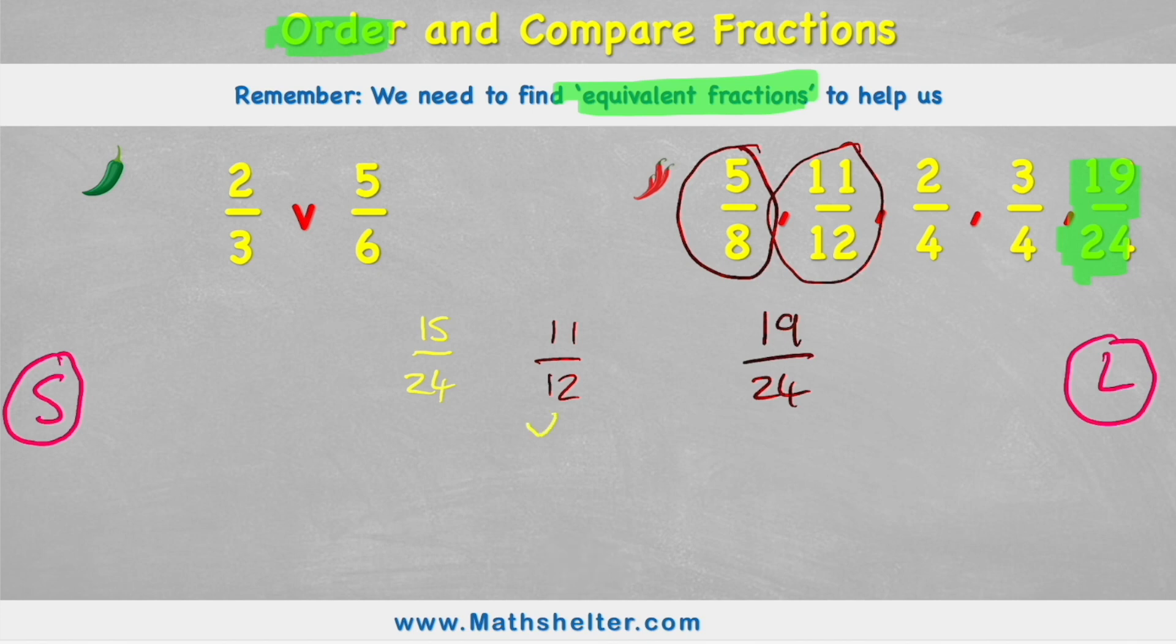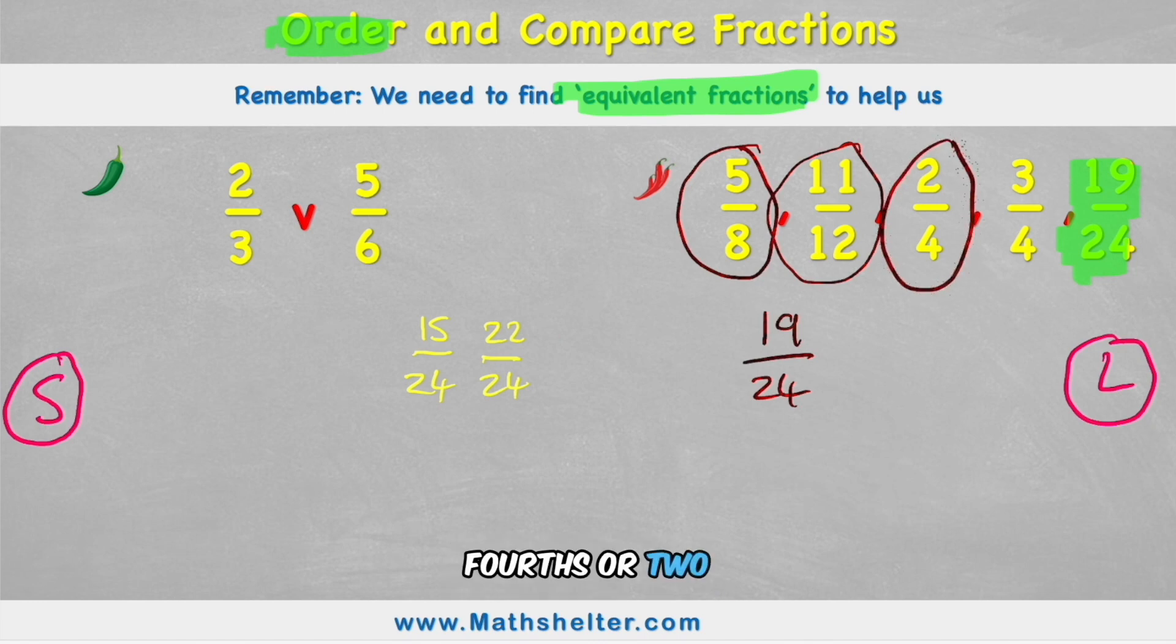My second example is 11 12ths. So how do I get from 12 to 24? Well, I must multiply it by 2. And if I'm multiplying the denominator by 2, I have to multiply the numerator by 2. 11 times 2 is 22. So my new 11 12ths is 22 24ths. Get rid of this one. And I'm ready to do my next example. I have 2 4ths or 2 quarters. And 2 quarters. How do I get my 4 to become a 24? Well, I'd need to multiply it by 6. 6 times 4 is 24. So if I multiply my 4 by 6 or my denominator by 6, I need to multiply my numerator by 6 as well. And 2 times 6 is 12. So my new fraction is 12 24ths. Get rid of my 2 quarters.